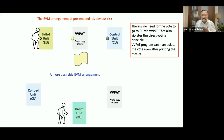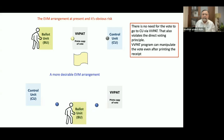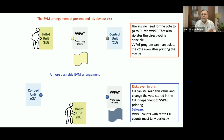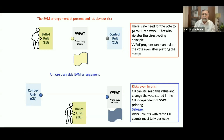That is what Mr. Kannan was talking about. A desirable arrangement would be: the voter goes to the ballot unit, decides to cast a blue vote, and that blue vote is simultaneously transmitted to the control unit and VVPAT. VVPAT prints the blue receipt, which the voter sees. Thereafter, the control unit registers the same blue vote. Clearly, in this case, the VVPAT does not connect to the control unit in any way.